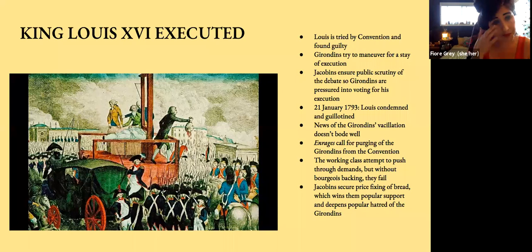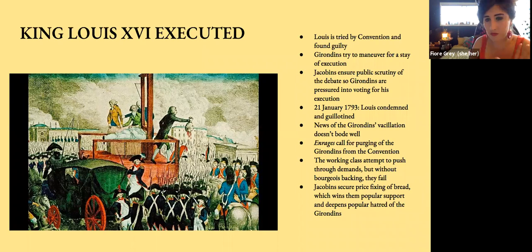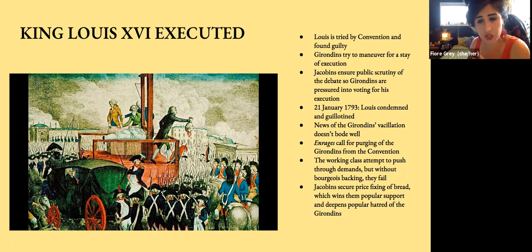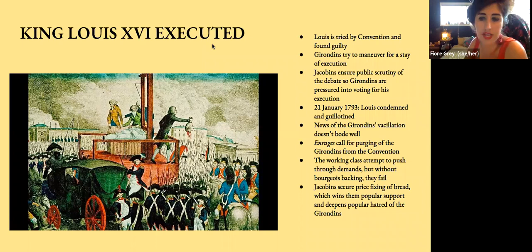King Louis was tried by the convention and found guilty. The Girondins maneuvered for a stay of execution, but the Jacobins made this very public, pressuring the Girondins into voting for Louis' execution. On the 21st of January 1793, he was condemned and guillotined. News of the Girondins' vacillation did not go over well — the Enragés called for purging the Girondins from the convention. The working class attempted to push through some demands but without bourgeois backing they failed. The Jacobins secured price fixing of bread, which won them popular support and deepened popular hatred of the Girondins.